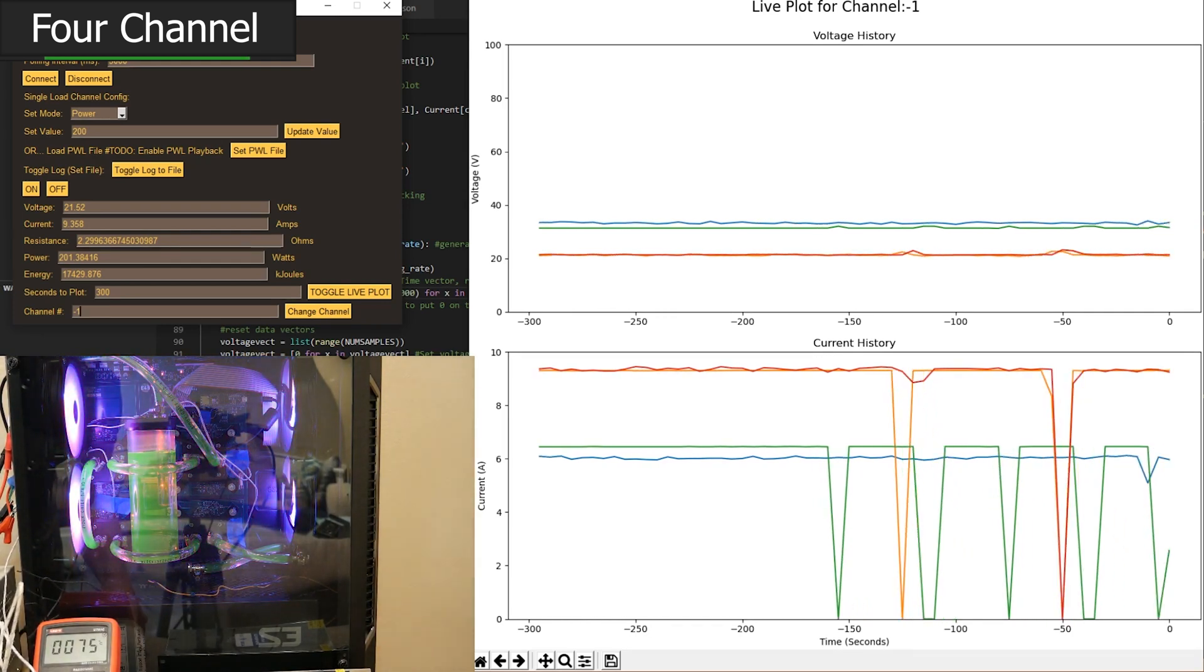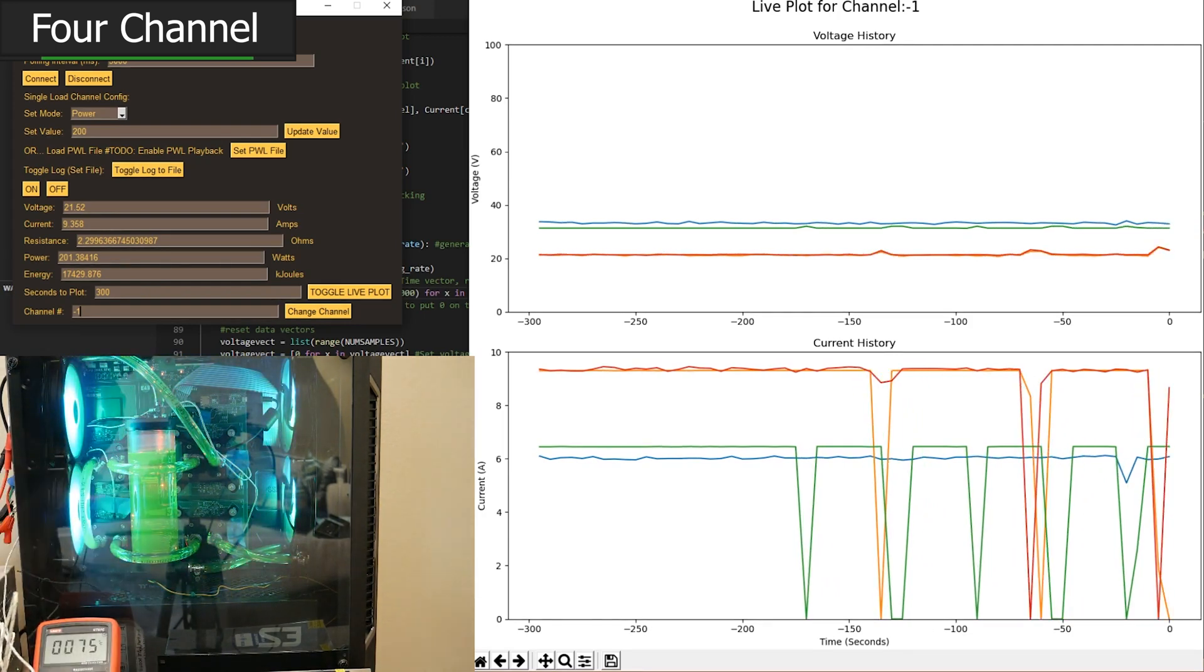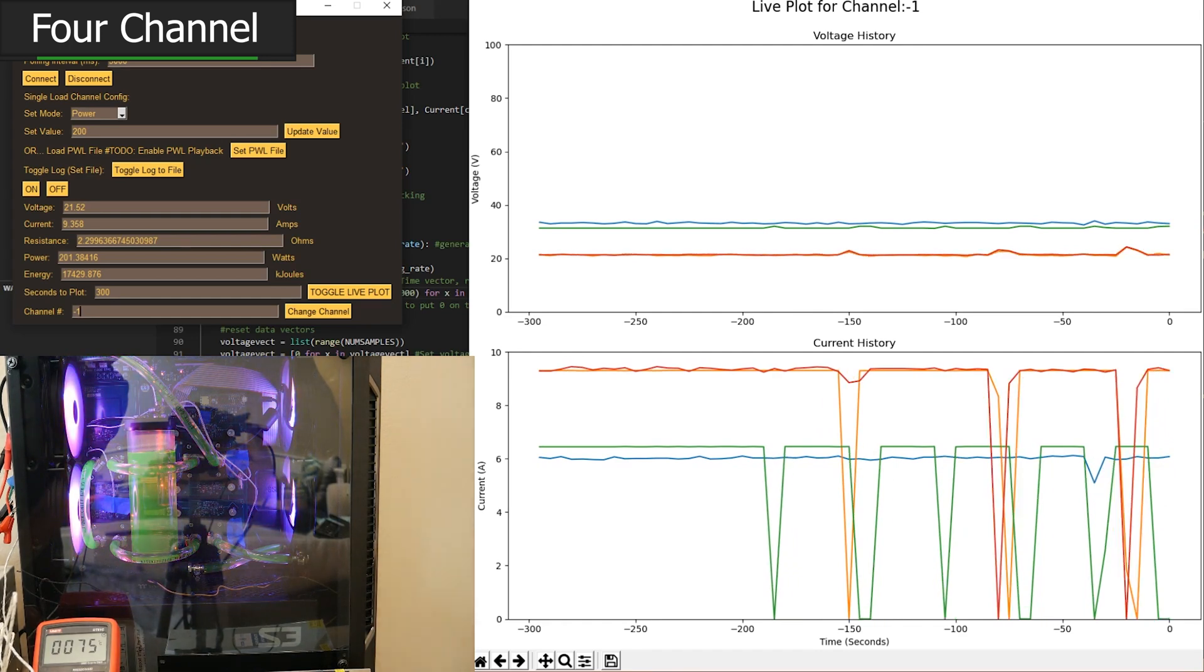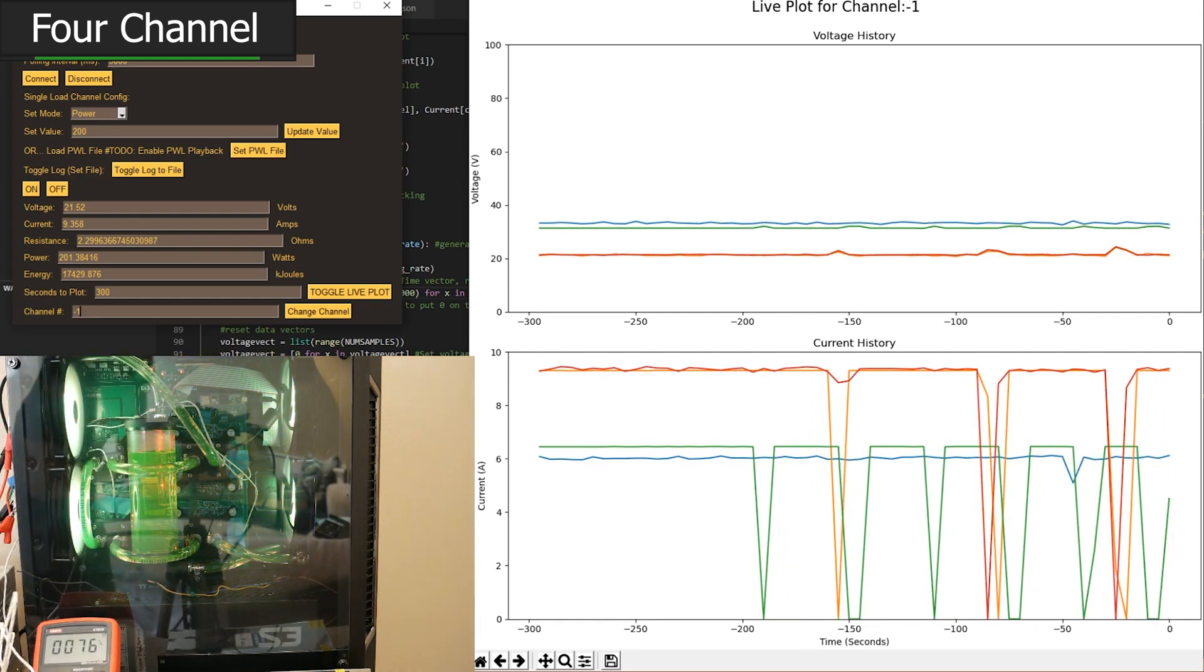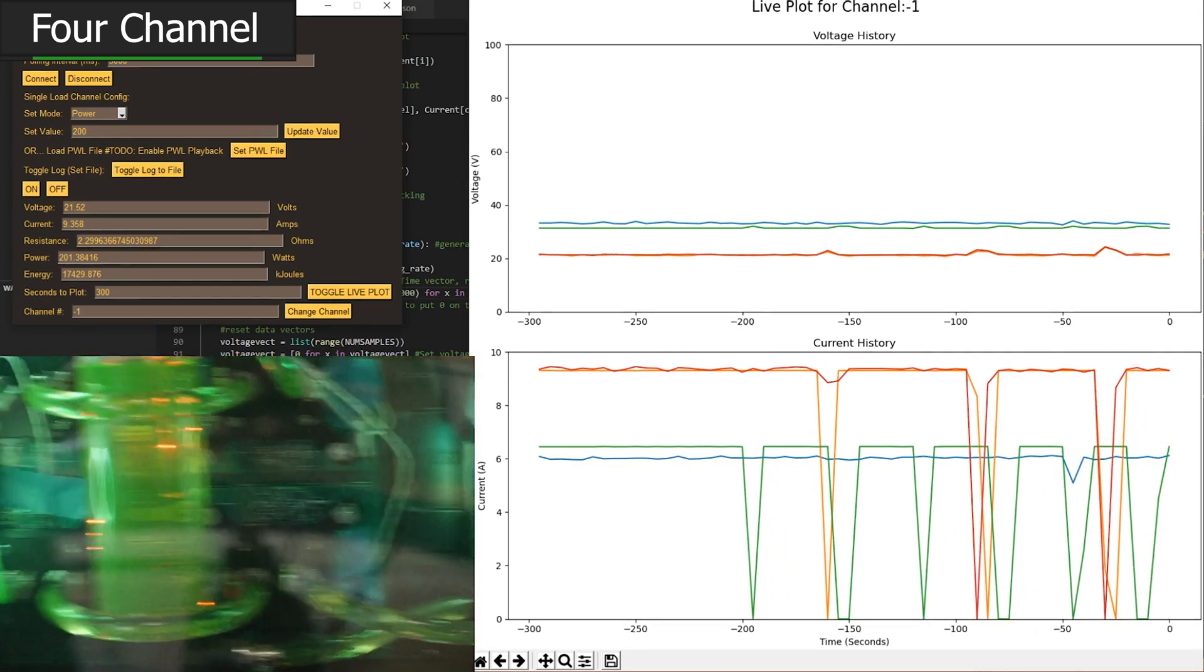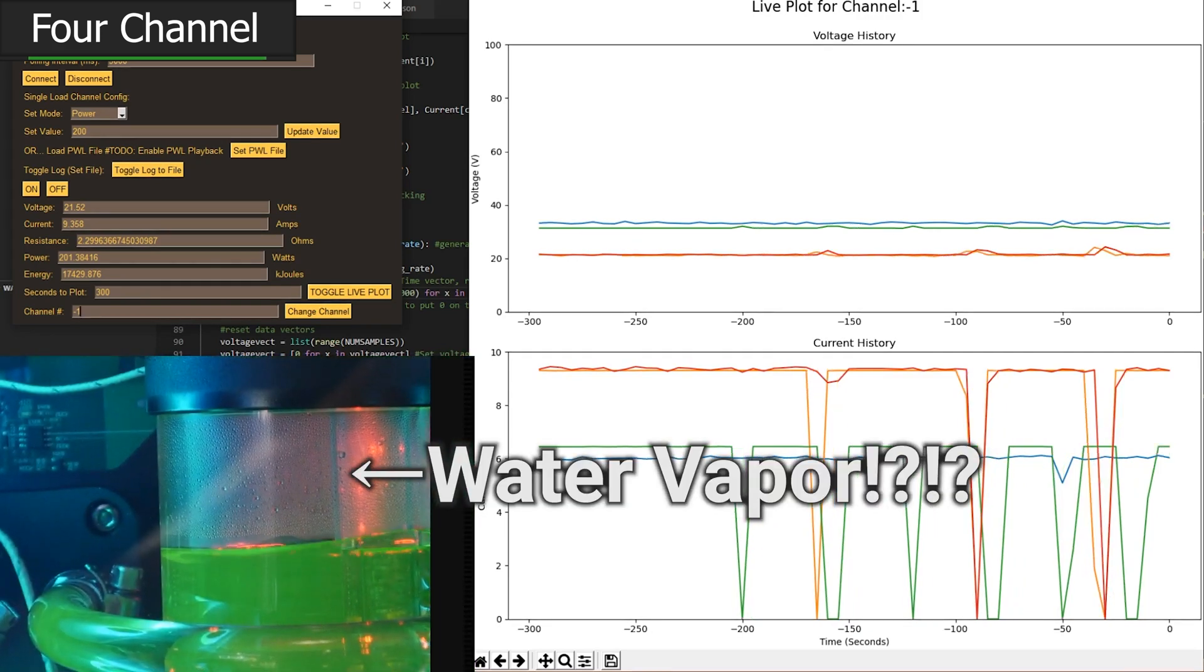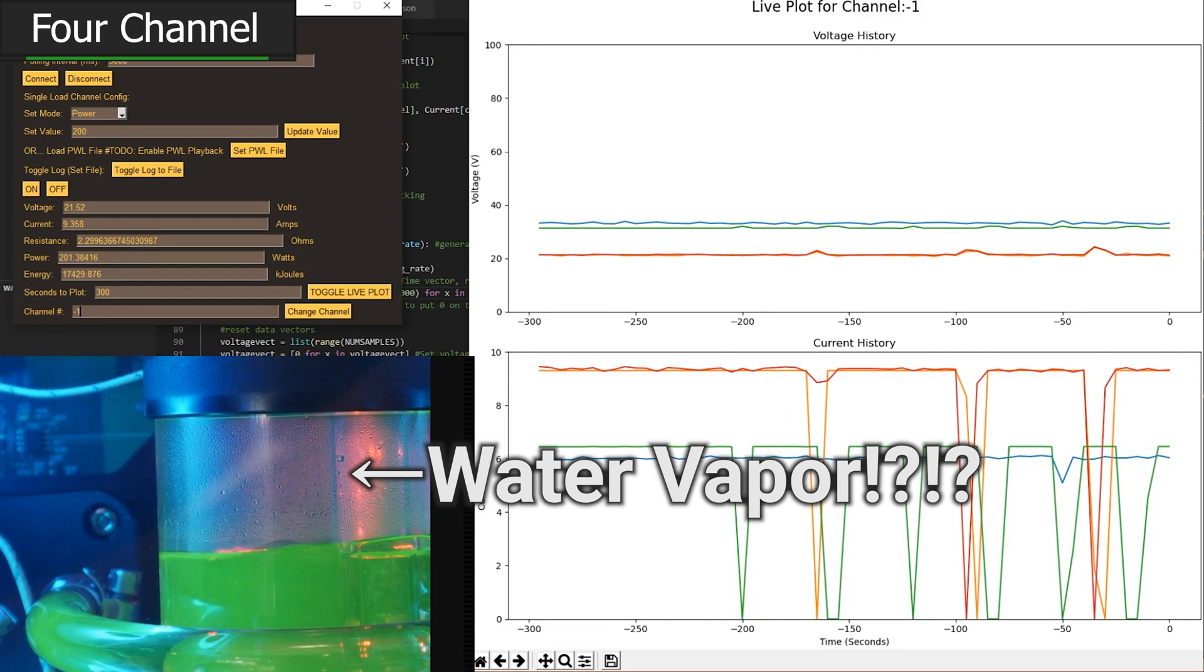As we approach equilibrium, the four blocks are increasing the water temperature by about 50 degrees Celsius from one end of the loop to the other, and the two radiators are managing that heat and bringing it back down by about 50 degrees Celsius. Water cooling is amazing.